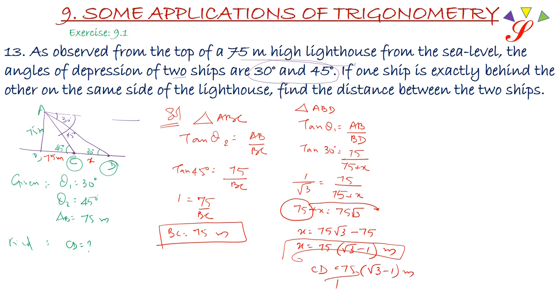The distance between two ships is 75(√3 − 1) meter.